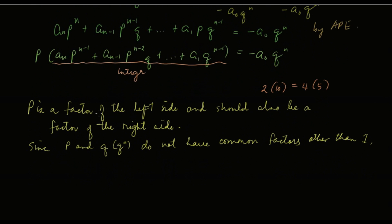And p is a factor of this. Since p and q do not have any common factor, and p is a factor of negative a sub 0 q raised to n. Because if it's a factor of the left side, it must also be a factor of the right side. p is a factor of the left side, so it's also a factor of the right side. But p and q or q to the n don't have any common factor.